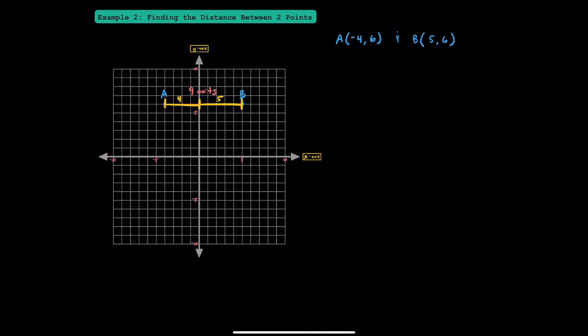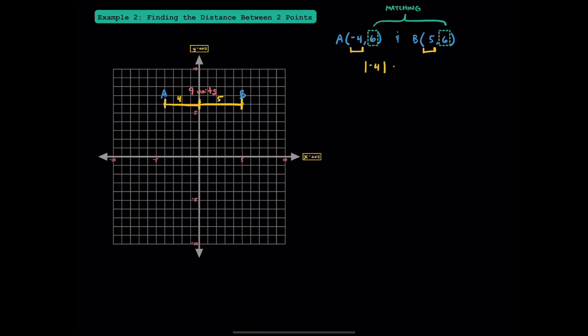So what if we want to find a distance between two points but we don't have graph paper? First, look at the ordered pairs and find either matching x-values or matching y-values. In this example, notice how the y-values match — they both equal 6. If that's the case, we can use their x-values to find the distance. Since negative 4 and positive 5 are on opposite sides of 0, we take the absolute value of negative 4 and add it to the absolute value of 5. That's 4 plus 5, which equals 9. Points A and B are 9 units apart.